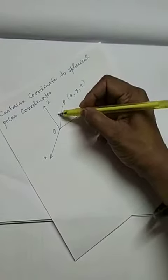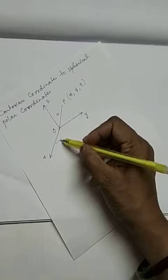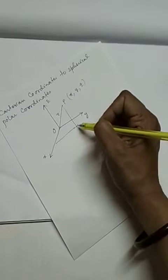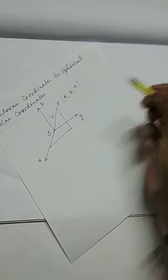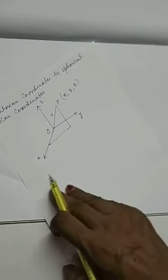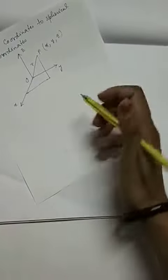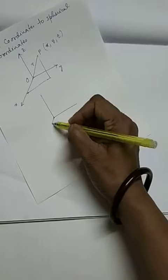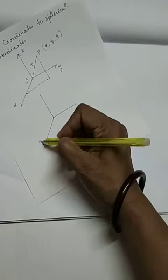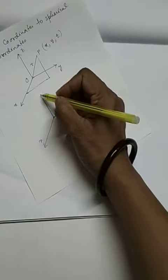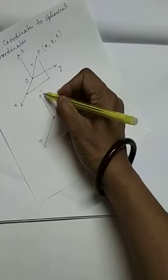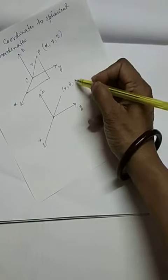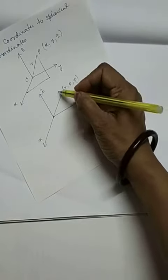QP is R. Let R, theta, phi be the spherical coordinates.